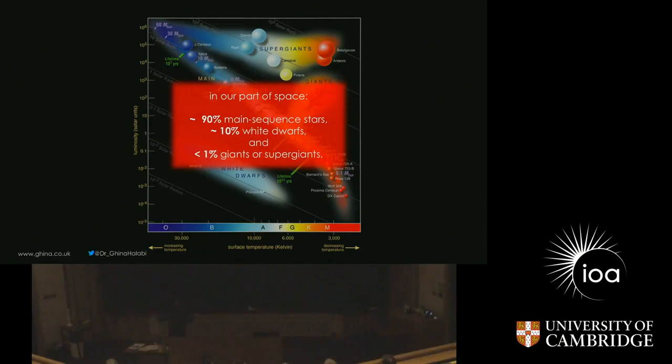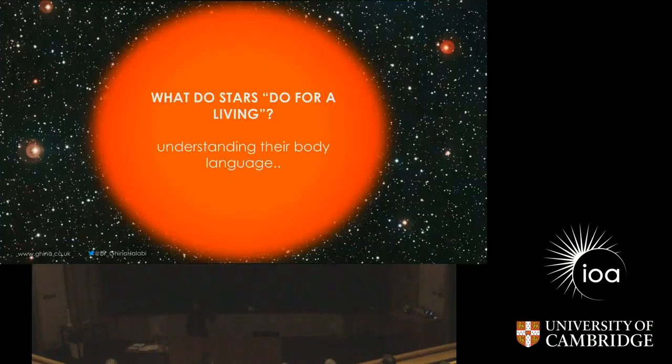In our neighborhood, 97% of the stars are main sequence stars. About 10% are white dwarfs and less than 1% are giants because the giant phase is very fast phase. So, stars evolve very fast through that phase and not many stars are giants. Now, as they evolve, what do stars do? How do they sustain their life?